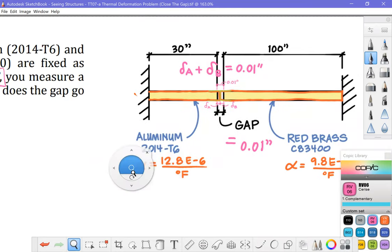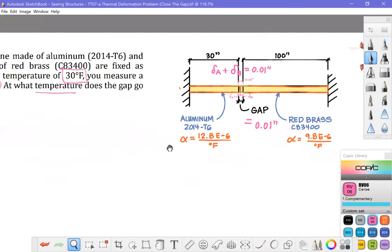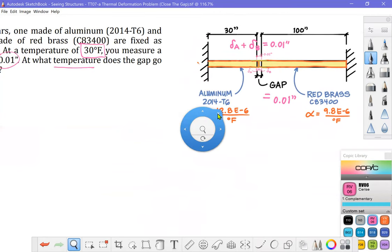All right that is the framework for the problem. We have the thermal coefficients there and I think we are ready to get to it. Okay so our equation is δA + δB sums up to 0.01 inches